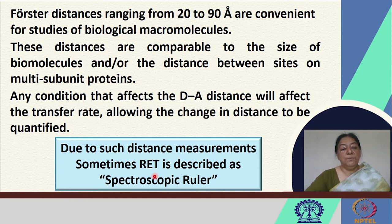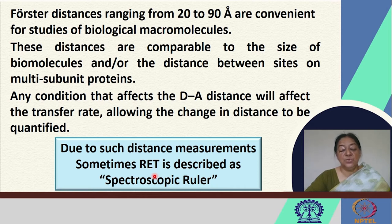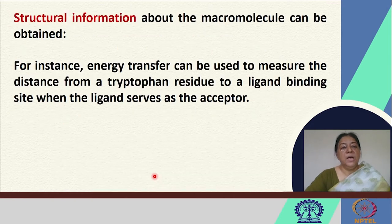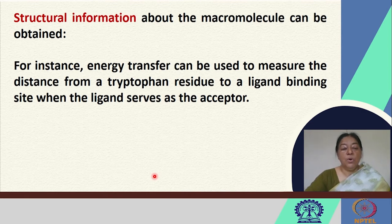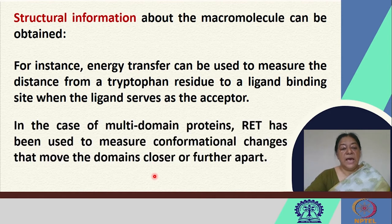We can locate specific residues that can be tagged with fluorophores as a donor and an acceptor. Based on this distance, we can look at protein folding and unfolding techniques or even protein-ligand interactions, which we will see later in the course. Structural information about the macromolecule can be obtained by measuring the distance from a tryptophan residue to a ligand binding site, looking not only at fluorescence emission quenching but also resonance energy transfer. In multi-domain proteins, this resonance energy transfer can be used to measure conformational changes that move domains closer or further apart.